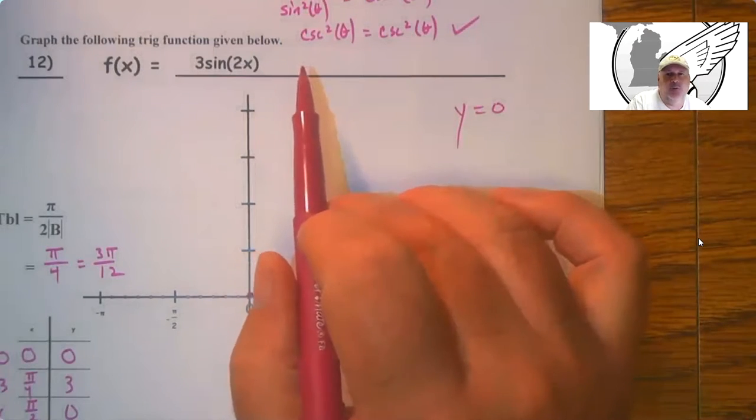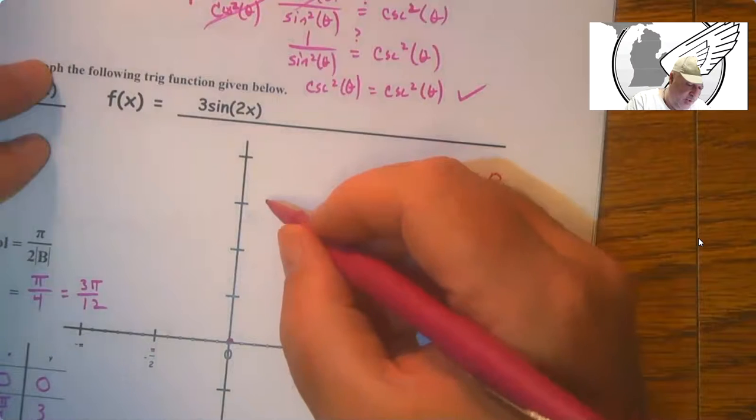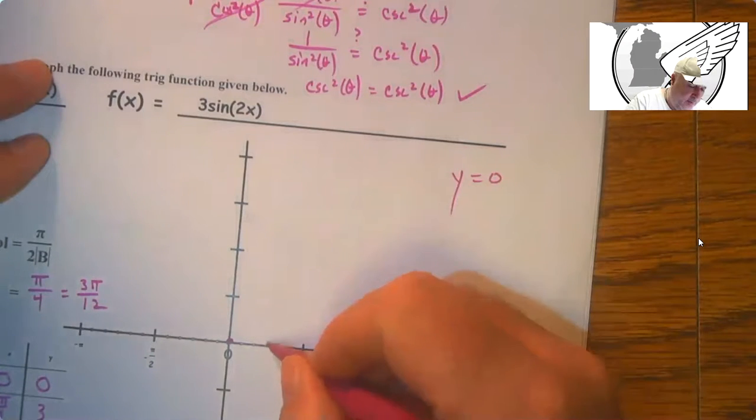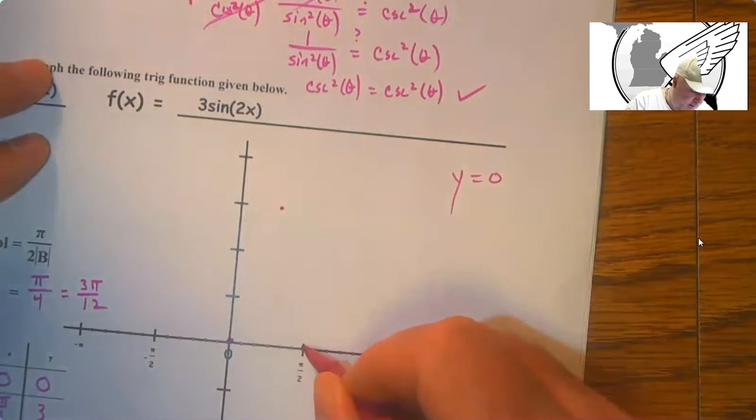That's the number added on the end. So if this said plus 2, y equals 2 would be your midline. And you'd have to change the curving around that. So 3, 3, 6, 0.